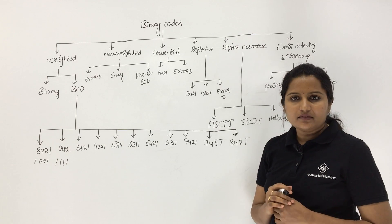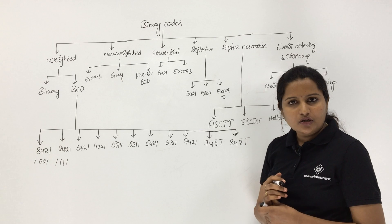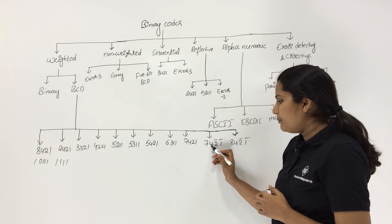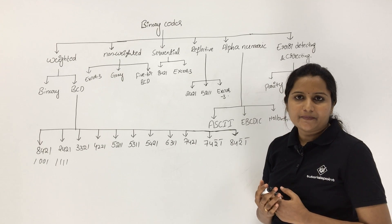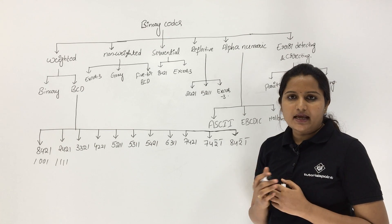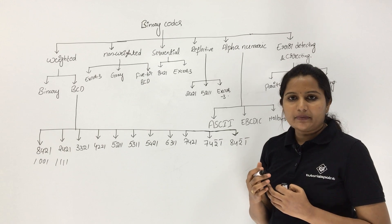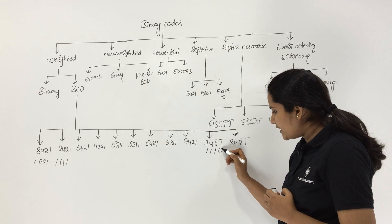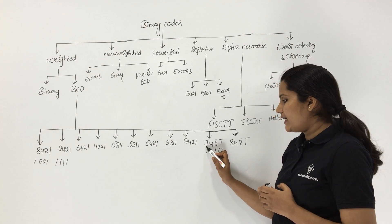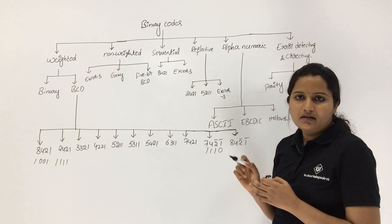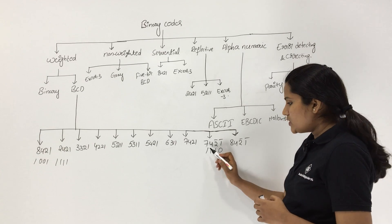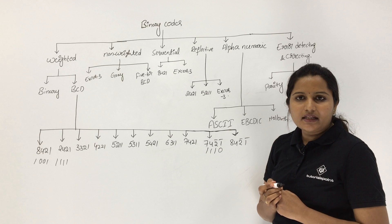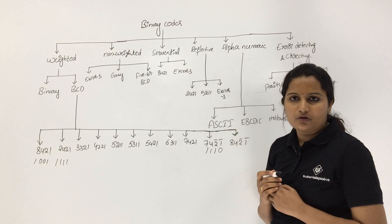To represent 9 in 742̄1̄ code: 7 plus 4 gives 11. To get 9, you need to subtract 2. So you take 7 and 4 with a 1, and place 0 under the 1̄ position: 7 plus 4 minus 2 equals 9. Therefore 1110 is the binary equivalent for 9 in 742̄1̄ code.